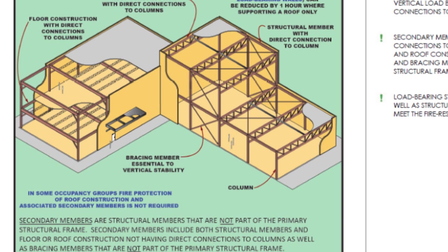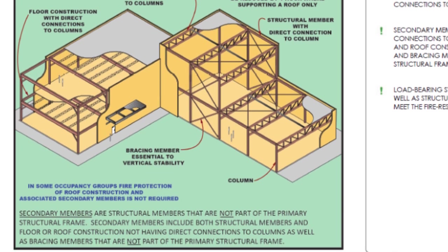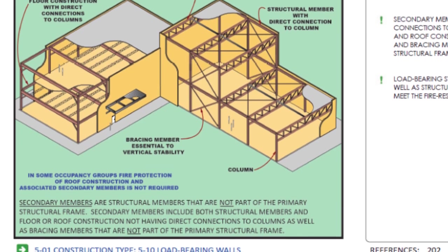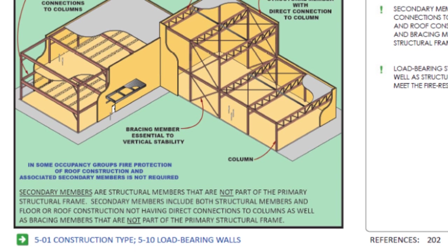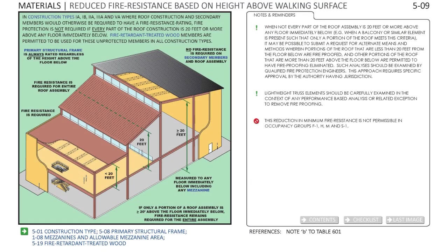There are also links to more detailed information about requirements and opportunities that might not be apparent from just looking at the building code itself. In this case, it can be possible to omit fire resistance from specific secondary members based on their height above the floor below.